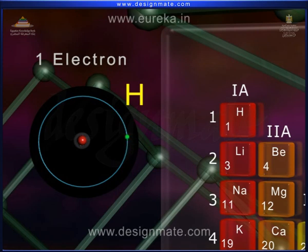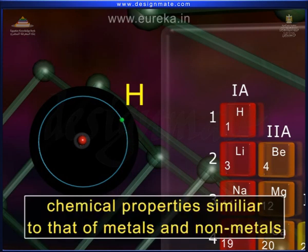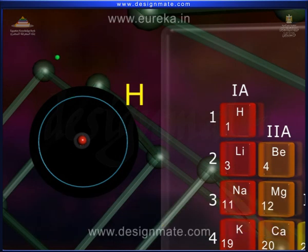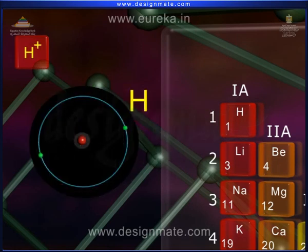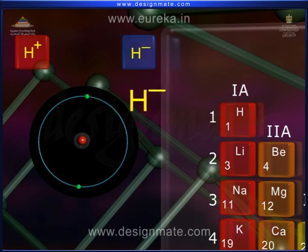Some chemical properties of hydrogen are similar to that of metals and nonmetals. In most compounds, its oxidation state is plus one. But under certain conditions, it forms a negative hydrogen ion H-, known as the hydride ion. This hydride ion has helium-like electronic configuration.